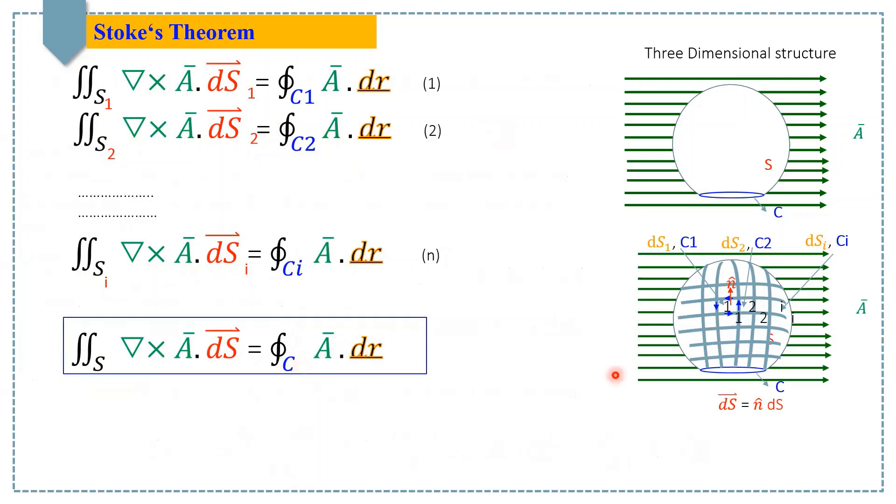Now the question is: are all elements contributing to the line integral of Stoke's Theorem? To answer this question, let's zoom in on the first two adjacent elements, one and two.